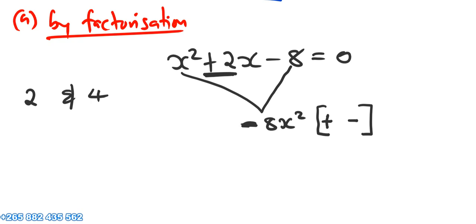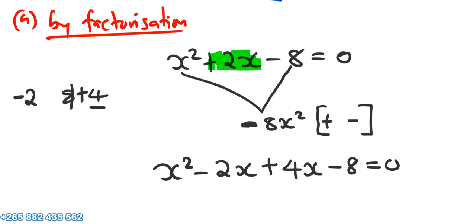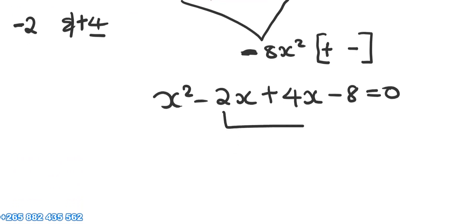Here is the key: we need a negative number. The factors are negative 2 and positive 4 — their product is negative 8 and their sum is positive 2. Instead of writing the middle term 2x, we are going to replace it with the factors: x squared minus 2x plus 4x minus 8 equals 0.